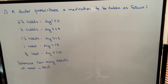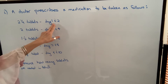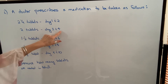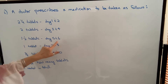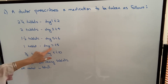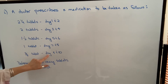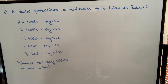The first example says a doctor prescribes a medication to be taken as follows: two and one quarter tablets on day one and day two; two tablets on day three and four; one and one half tablets on day five and day six; one tablet on day seven and eight; and three quarters of a tablet on day nine and ten. Determine how many tablets are needed in total.